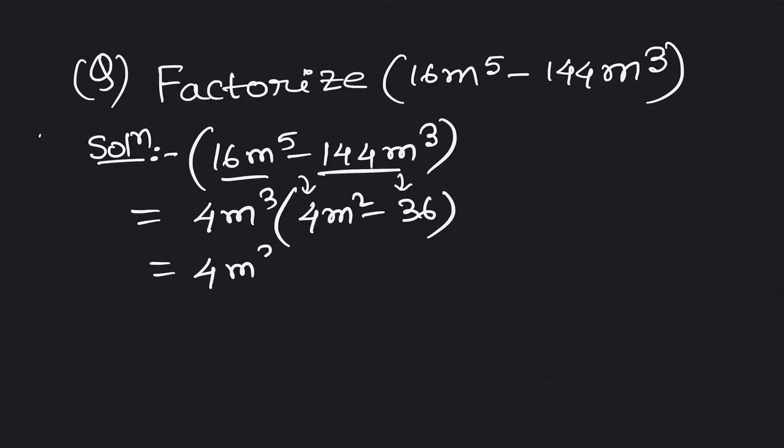Now we further simplify this term. Here we can write 4m square, we can write 2 into m to the power whole square.